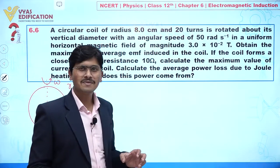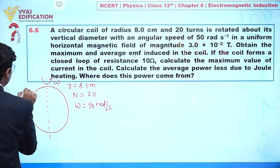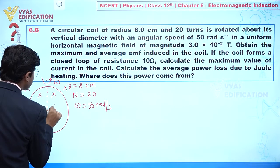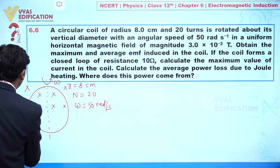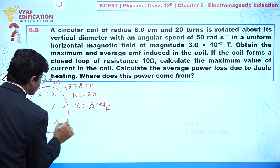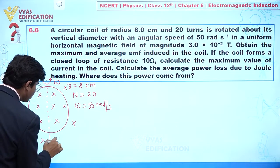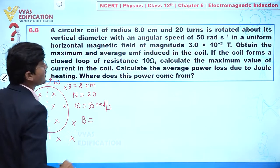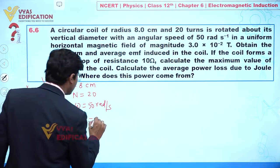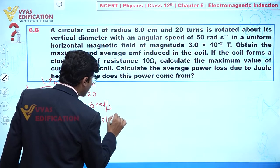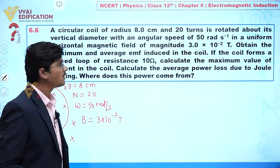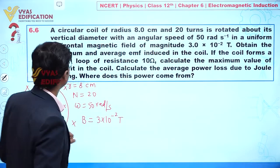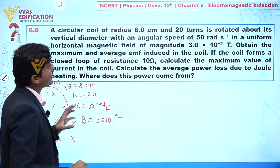In a uniform magnetic field — let's assume it is directed perpendicular inward — the value of B is 3 × 10⁻² tesla. Now we have to obtain the maximum and average EMF induced in the coil.